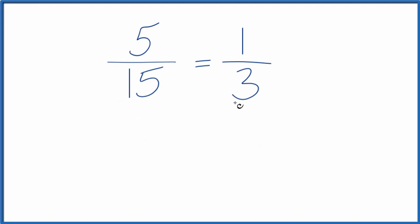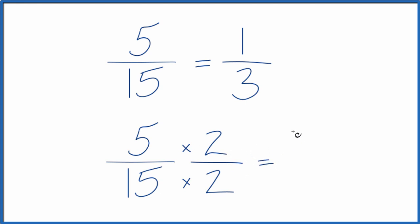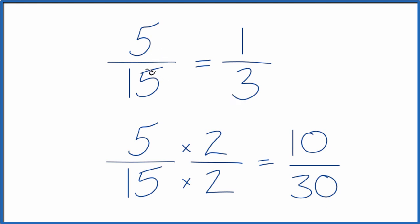Let's try another one. Instead of division, we could multiply. We could multiply 5/15 by 1, but that just gives us 5/15. Why don't we multiply by 2/2? 2/2 is just 1, so we won't change the value, just the way it's written. 5 times 2 is 10, and 15 times 2 is 30. So 10/30 is another equivalent fraction for 5/15.